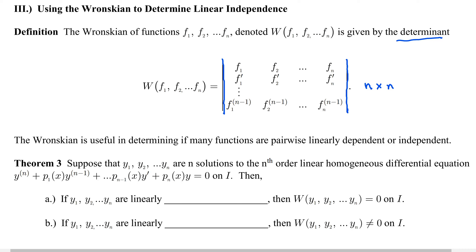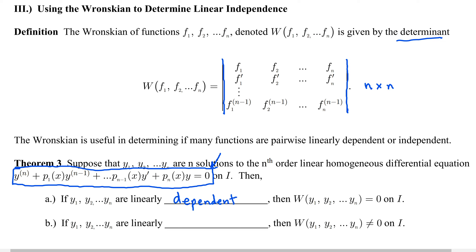Once we calculate the Wronskian, we apply this test: suppose y₁, y₂, ..., y_n are n solutions of the nth-order linear homogeneous differential equation. If they are linearly dependent, then the Wronskian equals 0. If they are linearly independent, then the Wronskian is not equal to 0. So if the Wronskian is nonzero, the functions are linearly independent.